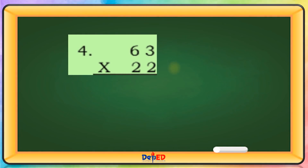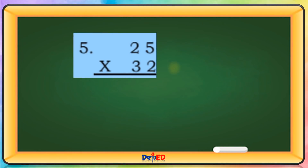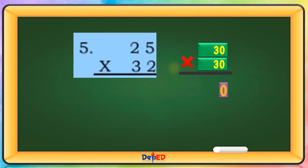63 will be rounded to 60. 22 will be rounded to 20. 60 times 20 equals — let's copy again the two zeros. And then multiply 2 times 6 equals 12. 25 will be rounded to 30. 32 will be rounded to 30. 30 times 30 equals — let's copy again the two zeros. And multiply 3 times 3 equals 9.